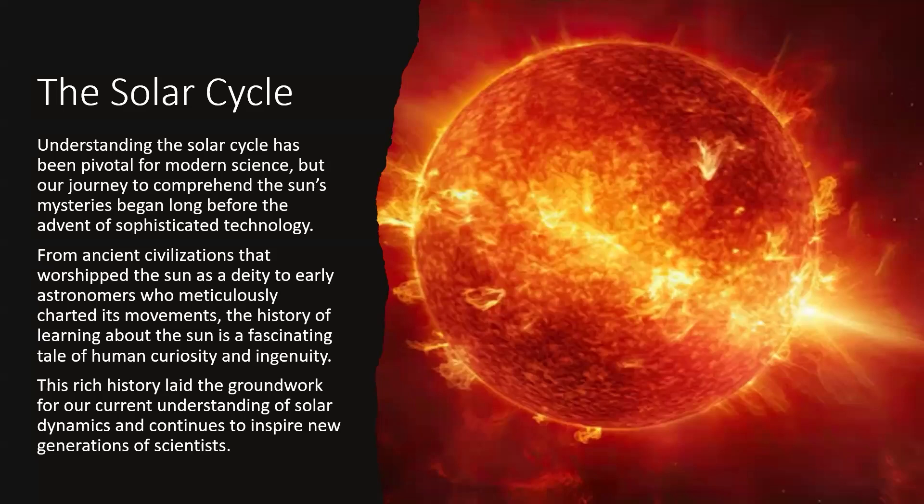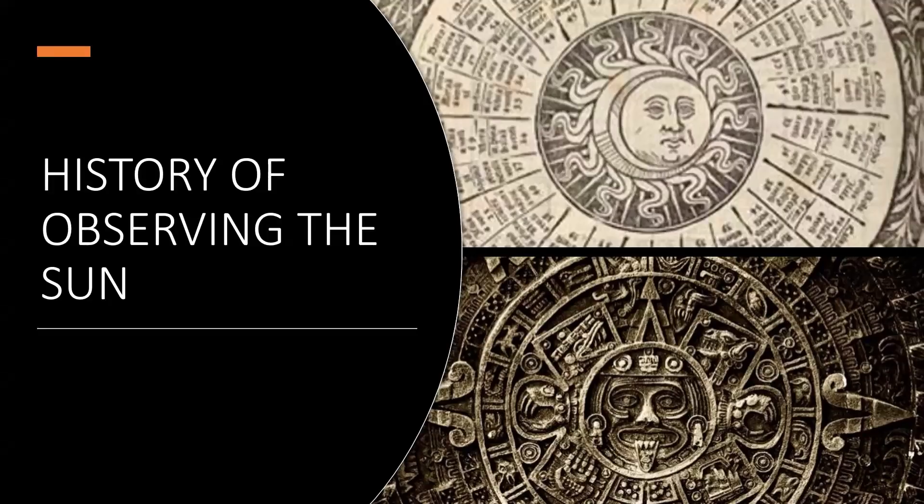Understanding the solar cycle has been pivotal for modern science. But our journey to comprehend the sun's mysteries began long before the advent of sophisticated technology. From ancient civilizations that worshiped the sun as a deity to early astronomers who meticulously charted its movements, the history of learning about the sun is a fascinating tale of human curiosity and ingenuity. This rich history laid the groundwork for our current understanding of solar dynamics and continues to inspire new generations of scientists. This curiosity of humans drives inventions, drives new knowledge, drives new way of doing things. Every discovery then becomes a stepping stone for new discoveries, a new way of gathering information, new way of gathering facts and information. So now we'll cover a bit of the history of observing the sun.